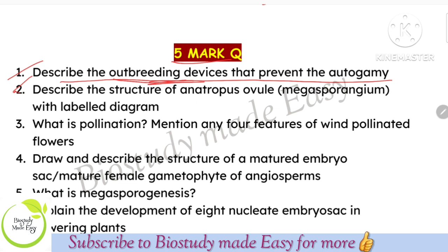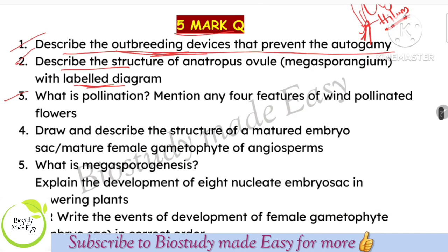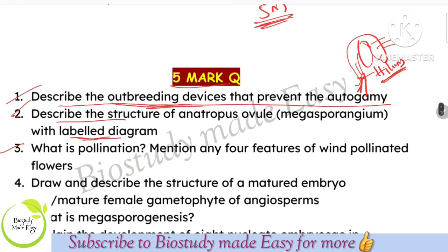Describe the structure of an anatropous ovule with a neat labeled diagram. If you have a diagram, describe it. The anatropous ovule consists of two integuments: outer integument and inner integument, plus nucellus (nutritive tissue), and the embryo sac. The stalk of the ovule is called the funicle, and the junction between the funicle and ovule is called the hilum. Draw the diagram with all labelings — each labeling carries half a mark.